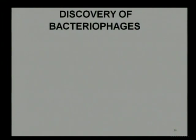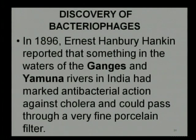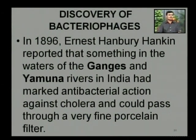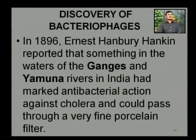We must have an idea of how such viruses or bacteriophages were first discovered and the role of various eminent scientists who contributed to their discovery. In around 1896, the scientist Hanbury Hankin reported that something in the water of the rivers Ganga and Yamuna was capable of treating diseases like cholera — meaning it had some antibacterial activity. However, they failed to identify that object because the component was so small that it could easily pass through a porcelain filter.